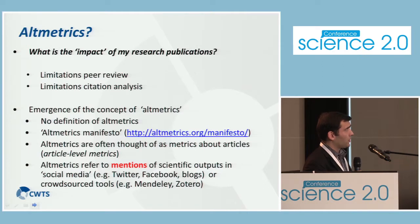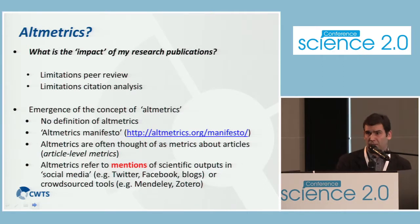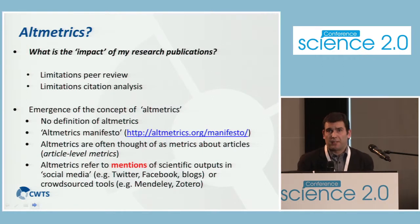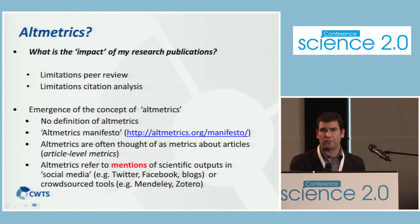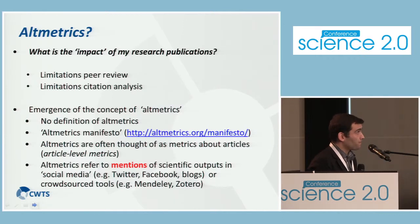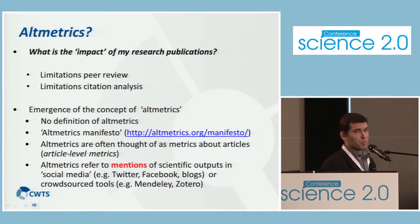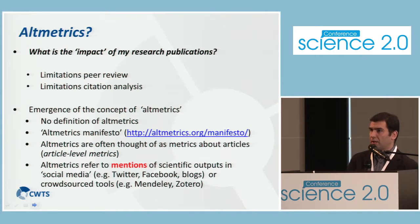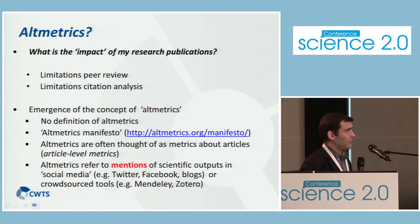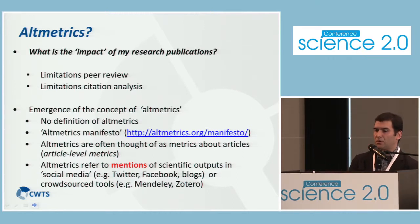Altmetrics are often seen as article-level metrics, but citations are also article-level metrics, so that's not exclusive to Altmetrics. In essence, a general definition would say that Altmetrics refer to mentions of scientific publications or scientific outputs in social media sources and tools like Twitter, Facebook, blogs, or crowdsourced tools like Mendeley or Zotero.